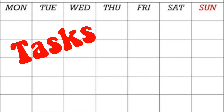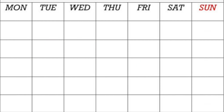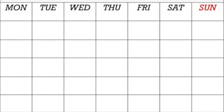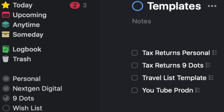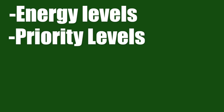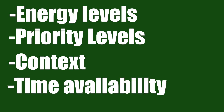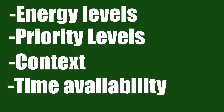The last and fifth step is Engage. Review your tasks and ideas on a weekly basis. I typically do this every Sunday and it takes me about 15 minutes. Then I reassign my tasks based on my energy level, priority, context, and the time available.